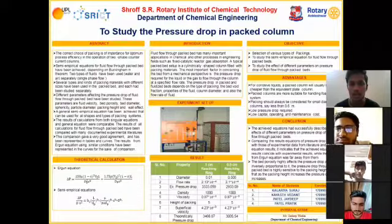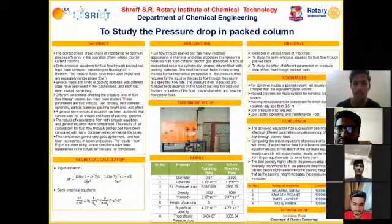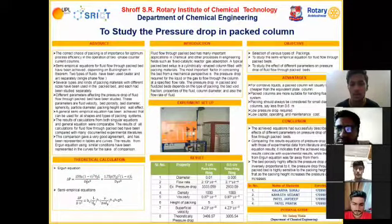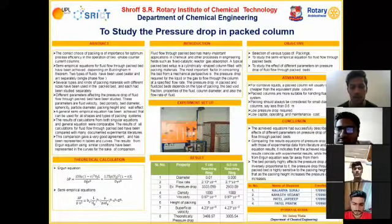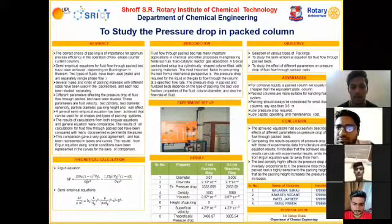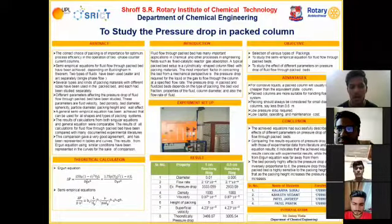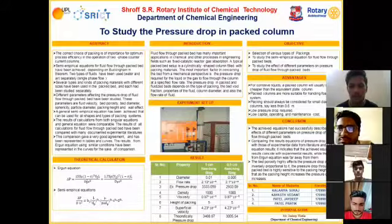For the theoretical calculation to find pressure drop in a packed column, first we determine pressure drop using the Ergun equation. Pressure drop is directly proportional to viscosity, density, length of the bed, and superficial velocity. Pressure drop is also inversely proportional to diameter and void fraction. We can also determine the pressure drop in a packed column using the semi-empirical equation.